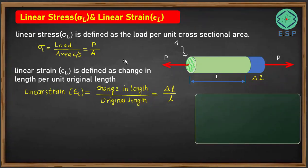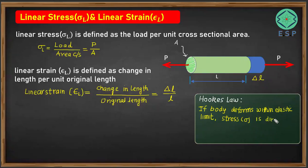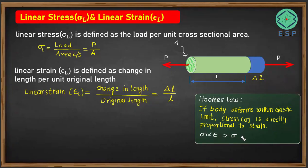Having understood linear stress and linear strain, let us revisit Hooke's law. Hooke's law says that if a body deforms within elastic limit, then stress is directly proportional to strain. From this, stress equals some constant times strain, where this constant E is called the modulus of elasticity.